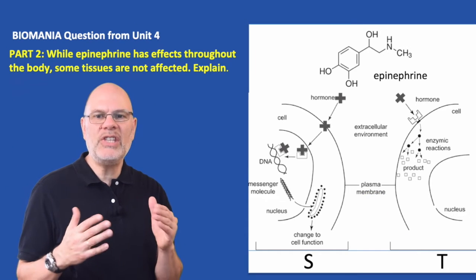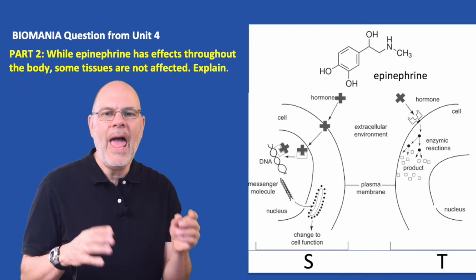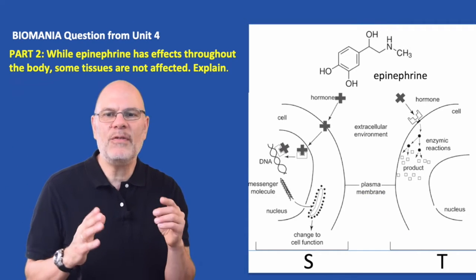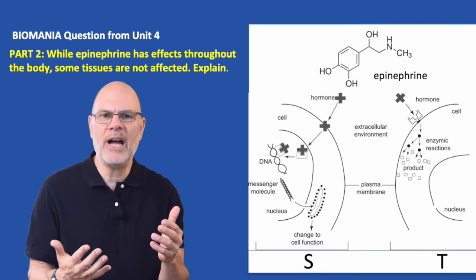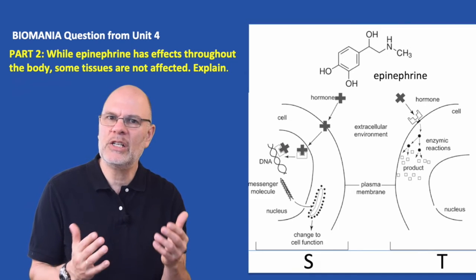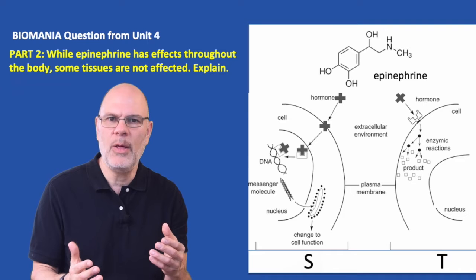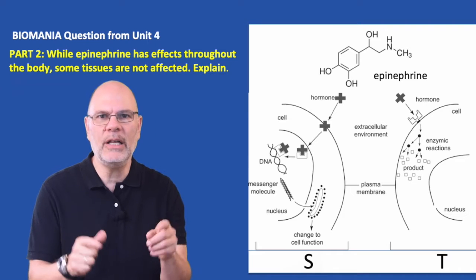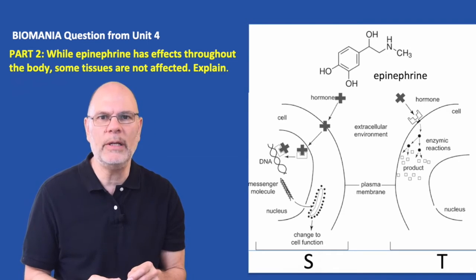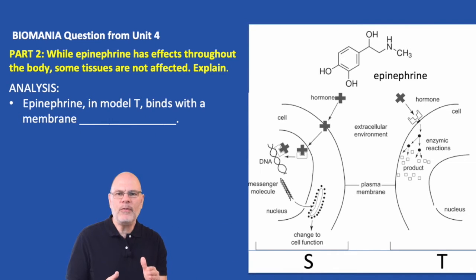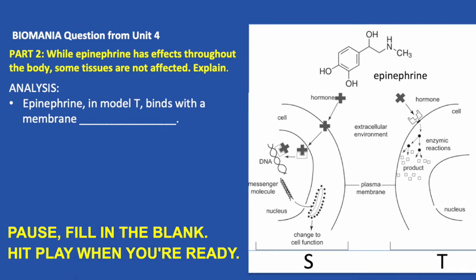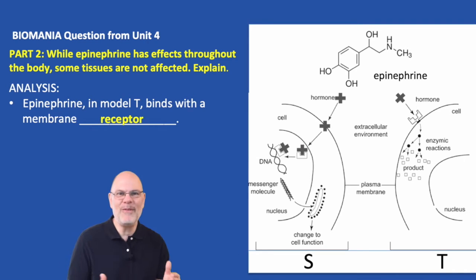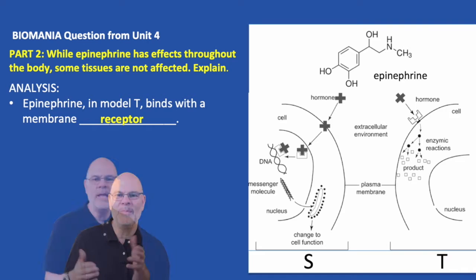Now let's move on to the second part of this question. Epinephrine has effects throughout the body, but some tissues are not affected. Explain how that could be. Think about it. Epinephrine in model T binds with a membrane receptor.